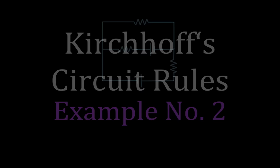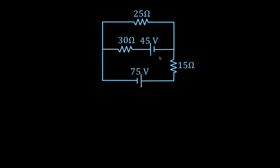This is the circuit we're going to use for this video. We have a 25, a 30, and a 15 ohm resistor, we have a 45 and a 75 volt source, and we're going to determine the currents and the direction of currents in those three branches.